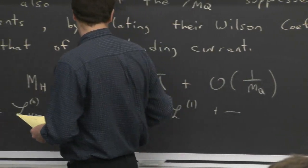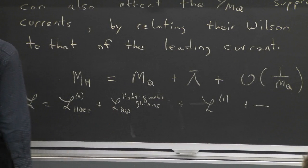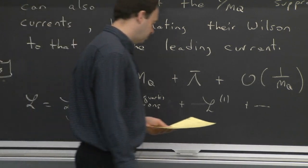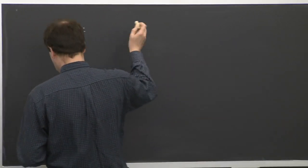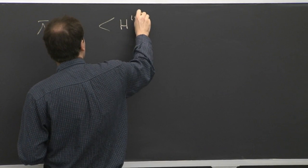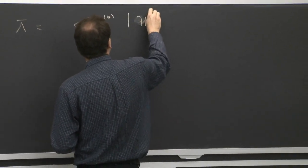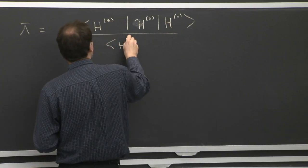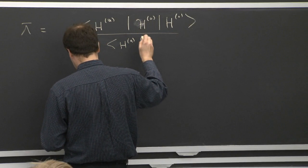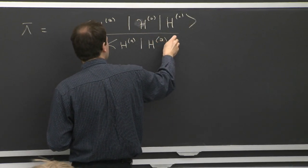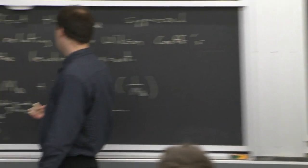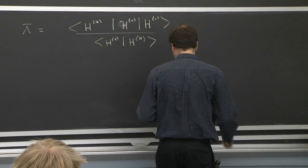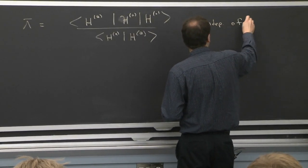The question is: if we have this Lagrangian, what is the mass of a heavy state like the B meson, D meson, or D star? First, what about the lambda bar term? That comes from these parts of the Lagrangian. If we take these parts and calculate the Hamiltonian H0, the definition of lambda bar is the energy you get by letting that Hamiltonian act on the state. Since the Hamiltonian has no heavy quark mass in it, you get a parameter — traditionally called lambda bar — that is independent of mq.